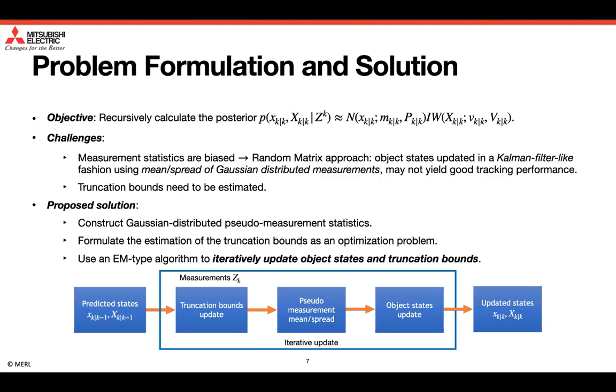Next, we initialize the iterative state update by first estimating the truncation bounds using measurements received at time k and the predicted object state. Then we construct pseudo measurement statistics using the predicted state and the updated truncation bounds, and use the pseudo mean and spread to perform the random matrix update step. Continuing in this fashion, we iterate through the truncation bounds update and the state update, until some convergence threshold is met.